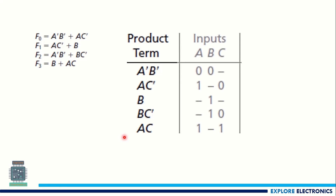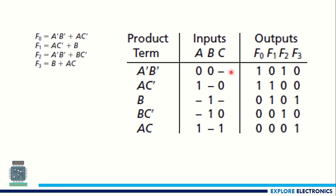These are the product terms we have. For the product term A bar · B bar, we take A as 0, B as 0 — there is no C term here. Similarly, for A · C bar, A is 1, C is 0, there is no B. For B, B equals 1; for B · C bar, 1 and 0, there is no A. For AC, A is 1, C is 1. For these input combinations, writing the outputs: A bar · B bar is associated with F0, so I write 1 at F0, and F2 also has A bar · B bar, so I write 1. A bar · B bar is not in F1, so I write 0. In the same way I have written F0, F1, F2. We can use this table to implement using PLA.